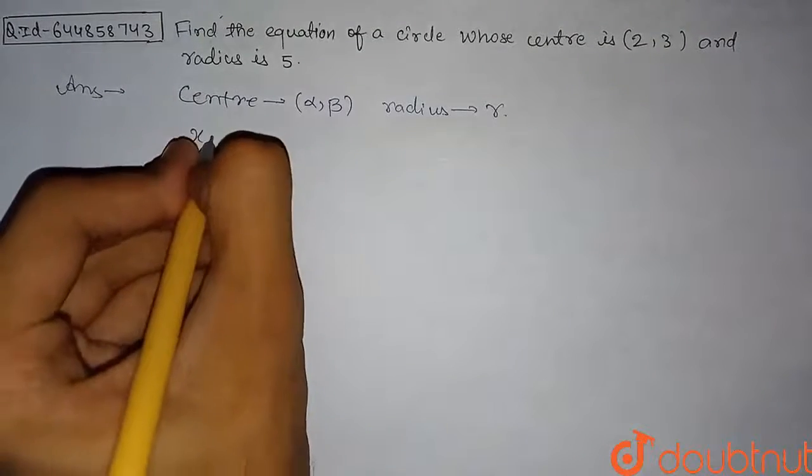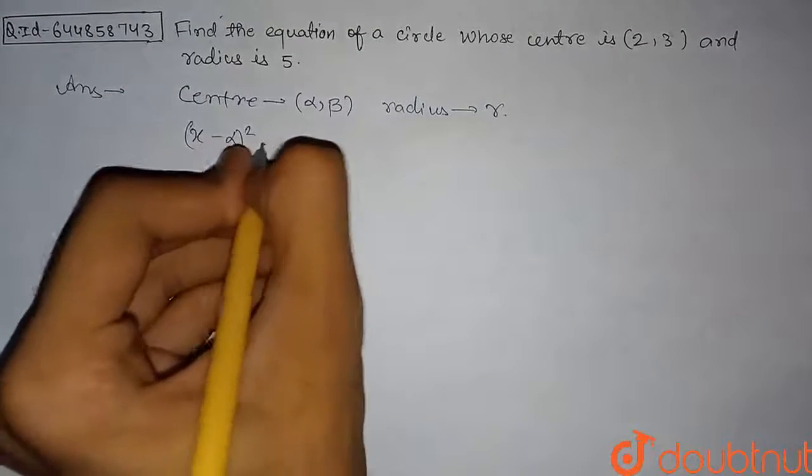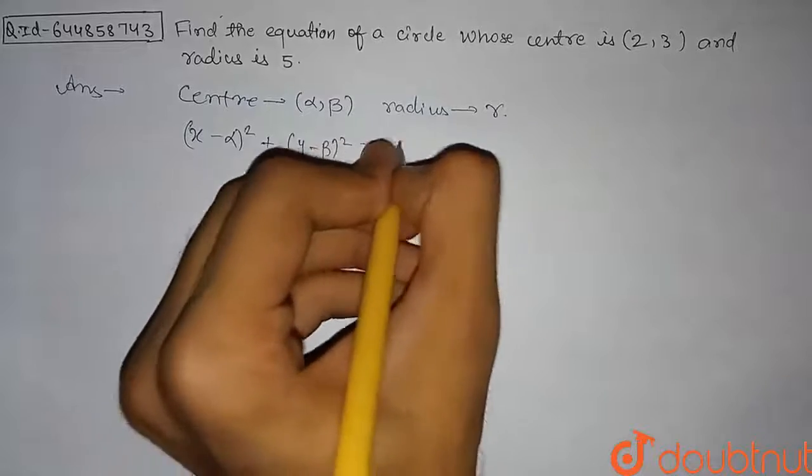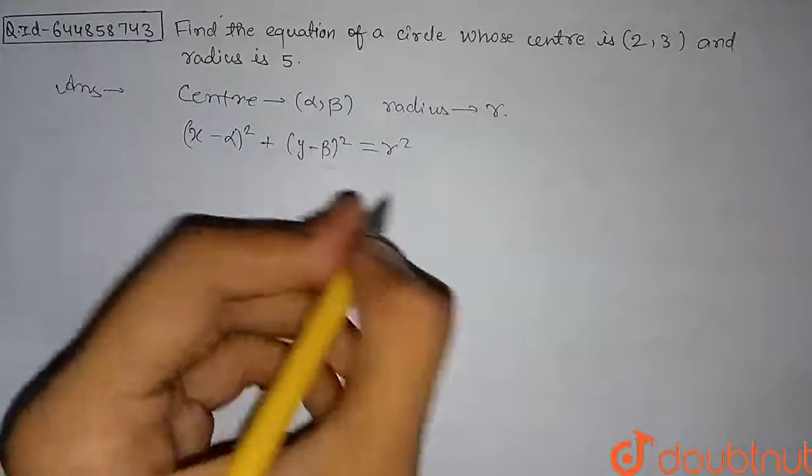The equation of circle can be written as (x - α)² + (y - β)² = r². So this is the basic structure of equation of a circle.